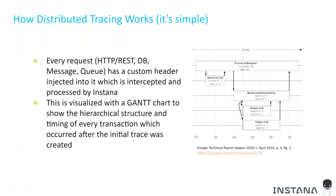What is distributed tracing? Within your applications, every method or framework responsible for communicating outside of the service — through a REST API call, a database call, or putting a message on a queue — will have a custom header or metadata injected into it, which is intercepted and processed by Instana. When a request comes in, a span ID is assigned to it. If there is no existing span ID, the parent ID is null. Every subsequent transaction has a parent-child relationship, allowing us to create a Gantt chart showing the hierarchical structure and timing of every transaction.